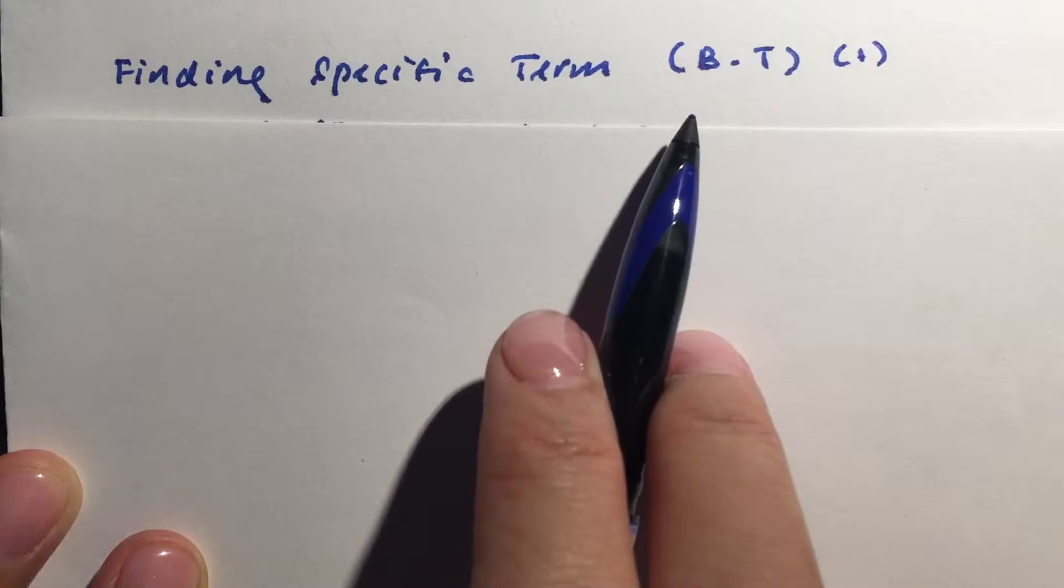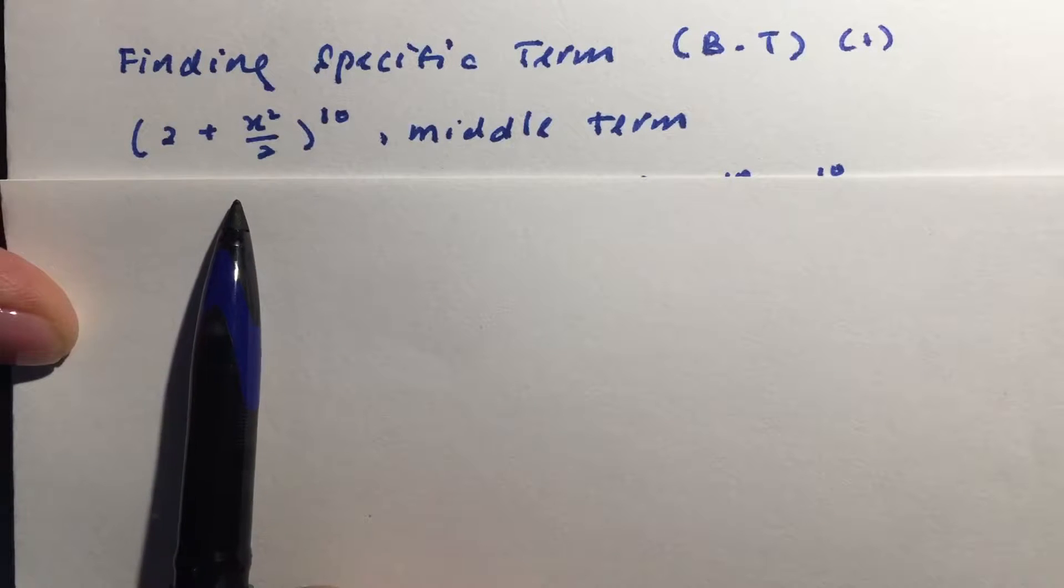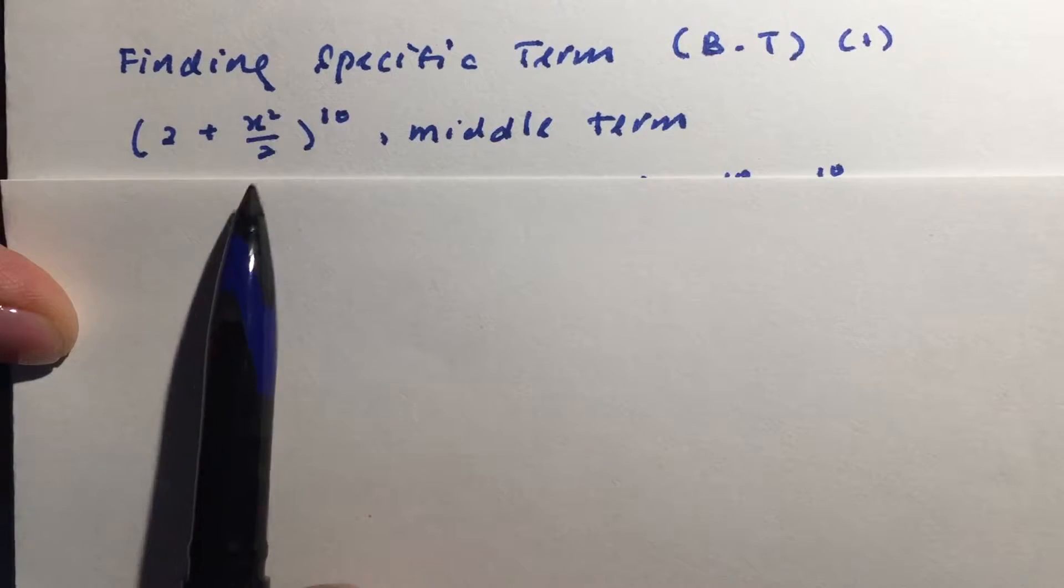Now, what we're going to do now is to find a specific term in your binomial expansion. So this time around, they're actually going to ask you to find the middle term given this. So you have 2 plus x squared over 2 to the power of 10.